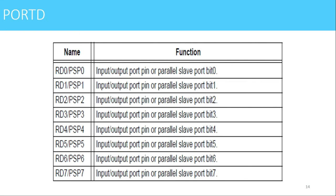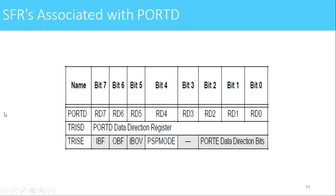Port D is multiplexed with a parallel slave port. Port D can be used either as a simple digital input-output port or as a parallel slave port — if you want to connect any parallel device to PIC16F877, it can be connected via port D. The SFRs associated with port D are PORTD, TRISD, and TRISE. TRISE is included because the alternate function of port D is the parallel slave port, and bits in TRISE control that functionality.